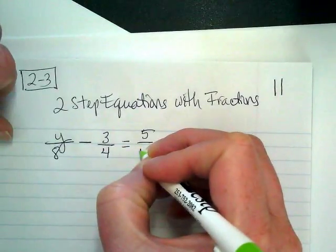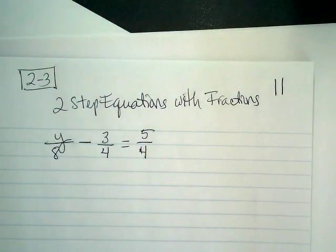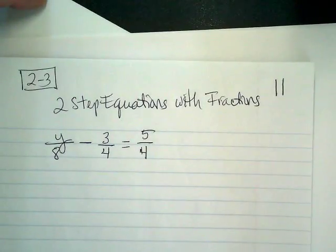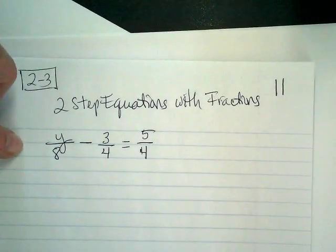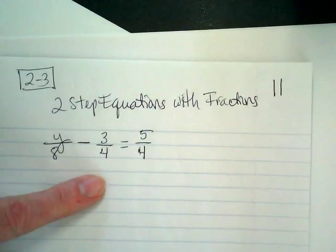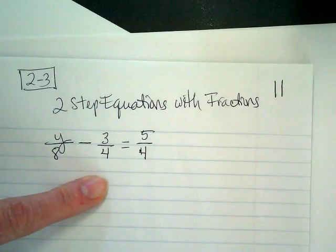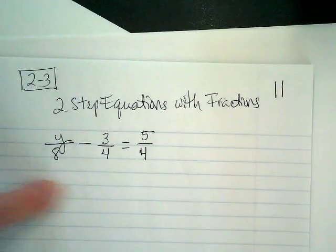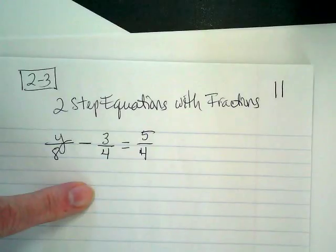I'm going to show you two ways to solve this problem. The first way is the way the book does it. I'm subtracting fractions here. What's the rule about adding and subtracting fractions? The denominator has to be the same. What should I change these denominators to so they're all the same? Eight.